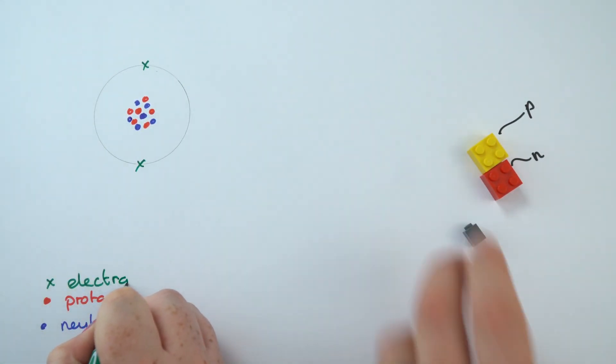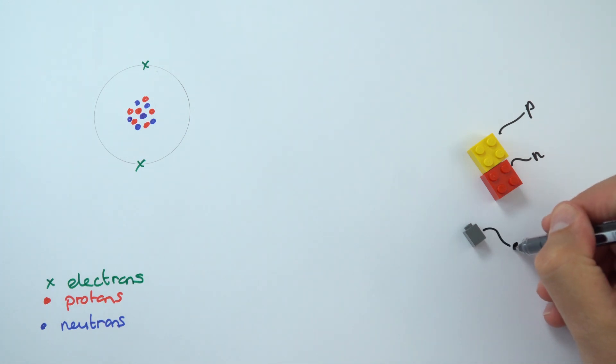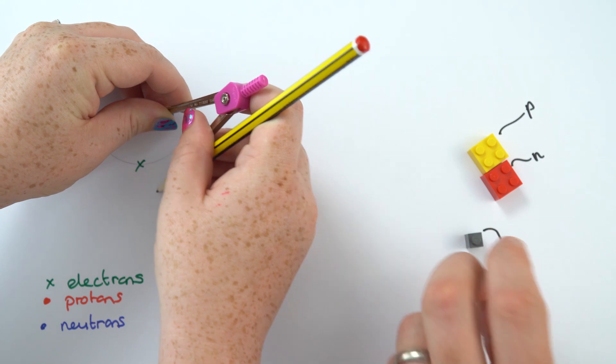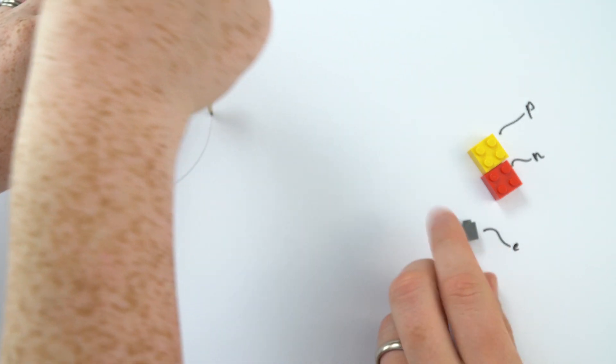And for my videos what I'm using are the smaller grey things to be my electrons. Again, they don't really have this colour, they're not really made out of Lego. But this is just a way that I can model the world around us.